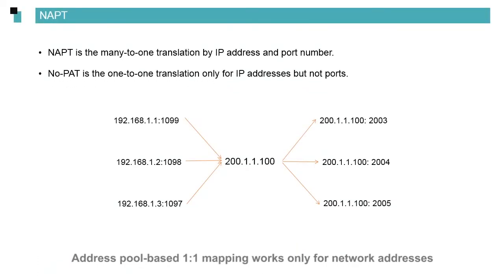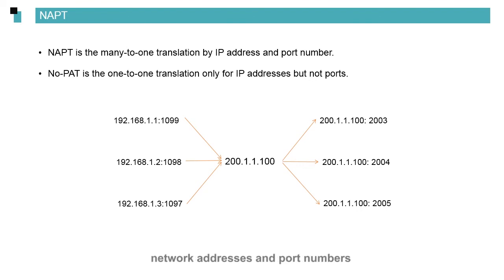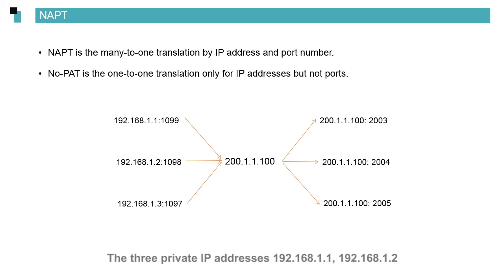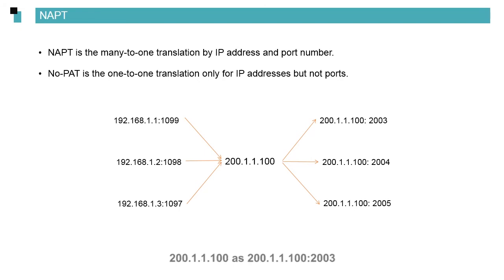Address pool-based 1-to-1 mapping works only for network addresses, while address pool-based N:1 mapping works for both network addresses and port numbers. The implementation maps the three private IP addresses — 192.168.1.1, 192.168.1.2, and 192.168.1.3 — to the public IP address 200.1.1.100, using port numbers 200.1.1.100:2003, 200.1.1.100:2004, and 200.1.1.100:2005 respectively.